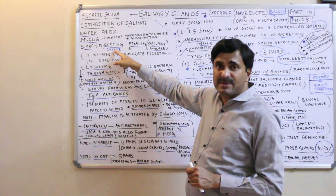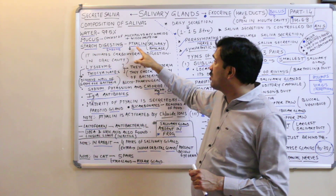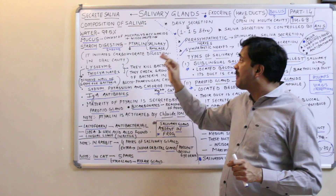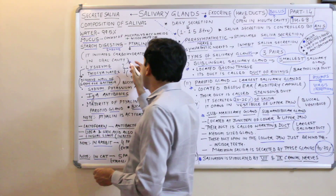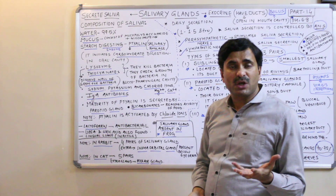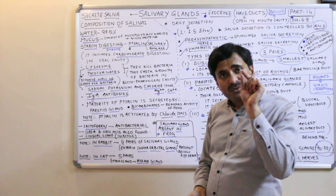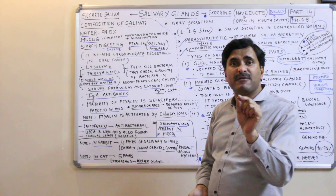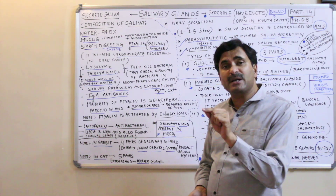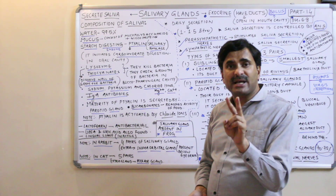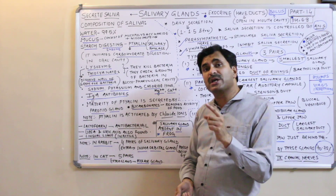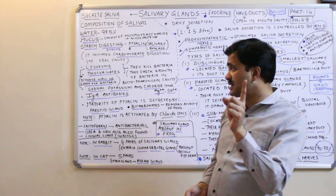In our saliva, a starch-digesting enzyme is present known as ptyalin, also called salivary amylase or alpha-amylase. It initiates carbohydrate digestion in the oral cavity — it is a starch-splitting enzyme. About 30% of carbohydrates are digested in the buccal cavity because of this enzyme. When starch is split, two products are formed: a disaccharide sugar called maltose and limit dextrin, making the food in the buccal cavity sweeter.